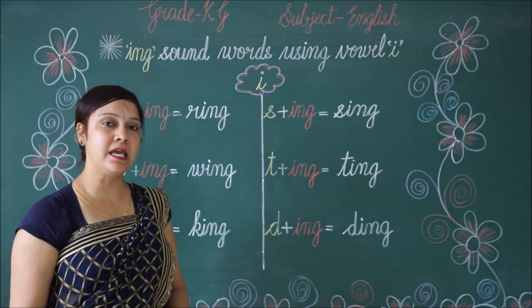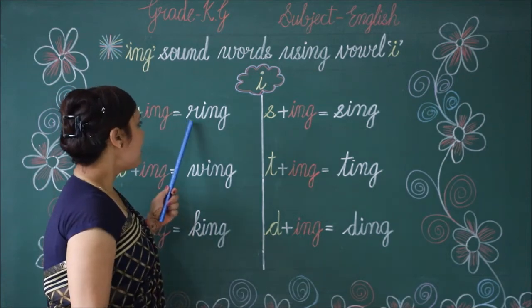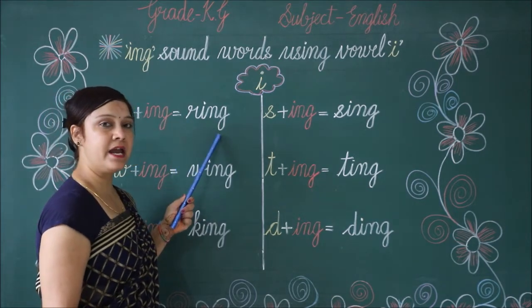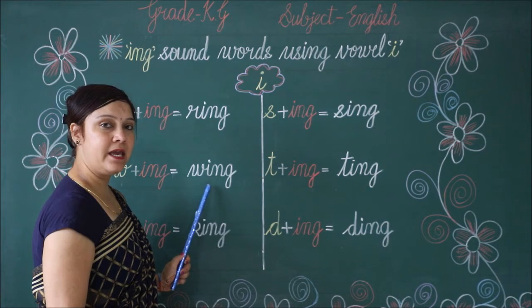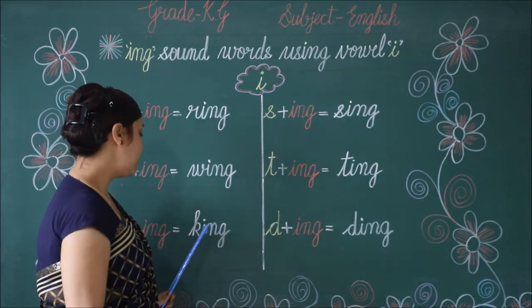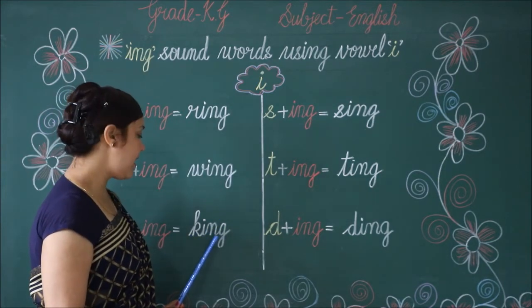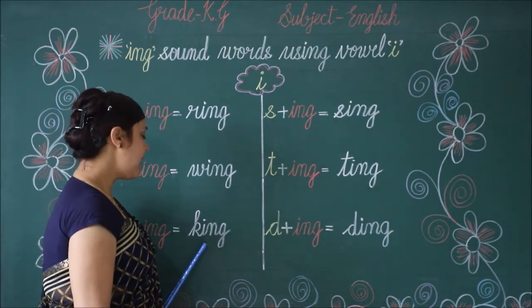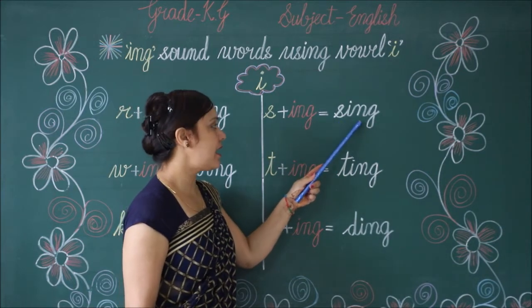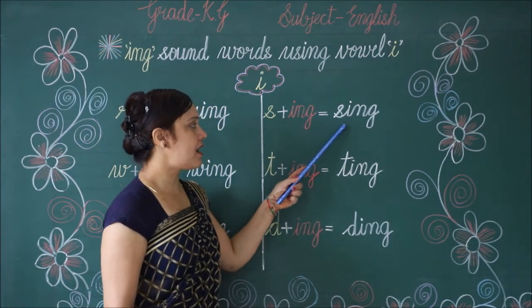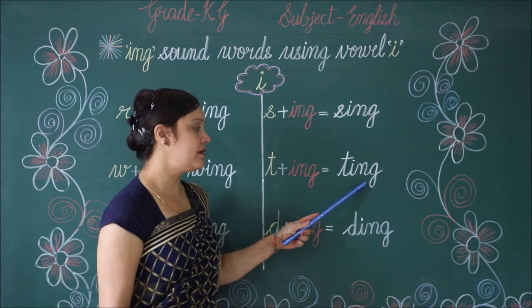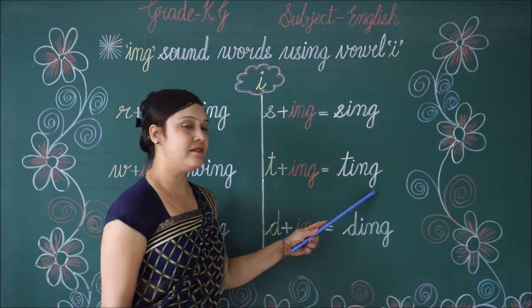Now we will learn to write ing sound words. R-I-N-G, R-I-N-G, ring. W-I-N-G, W-I-N-G, wing. K-I-N-G, K-I-N-G, king. S-I-N-G, S-I-N-G, sing. T-I-N-G, T-I-N-G, ting. D-I-N-G, D-I-N-G, ding.